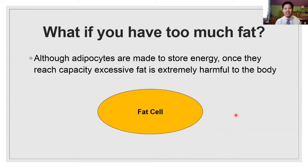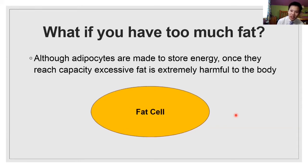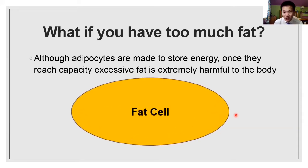So when you start to buy too many clothes, your closet starts to overflow and your clothes start to come onto the ground, into your bed, into other rooms in your house. Same thing with the fat cell. If you eat too many calories and you're consuming too much fat, your fat cells are going to expand and they're going to reach a limit where they can't handle it anymore.